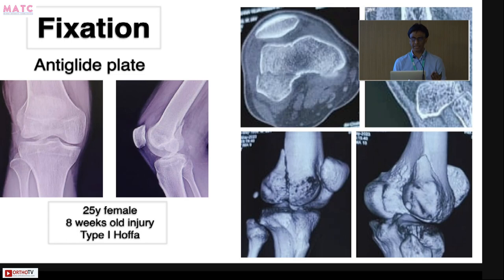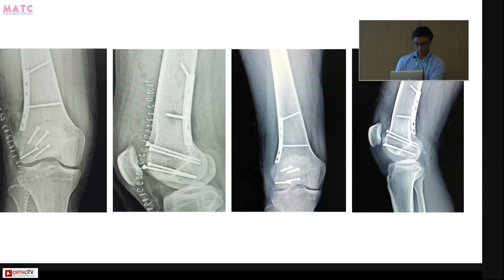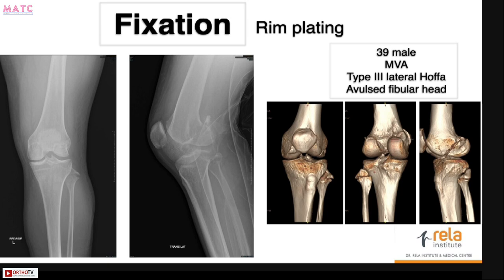Different plating configurations can be used. This was a 25-year-old female seen at eight weeks — CT showed comminution at the intermediate level, some impaction, and a long apex with a long cortical segment, which can be advantageous. She underwent open reduction with 2.7 lag screws from the articular cartilage, 3.5 screws proximal to that, and a posterior antiglide plate. Another case showed a displaced OFA with a fibular head avulsion, treated with open reduction using a Gerdy tubercle osteotomy and a pelvic plate along the rim of the articular cartilage.